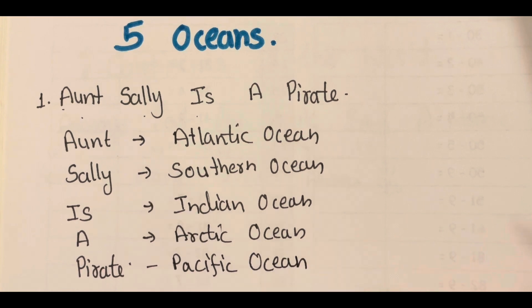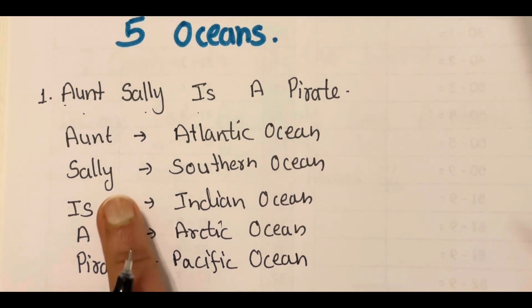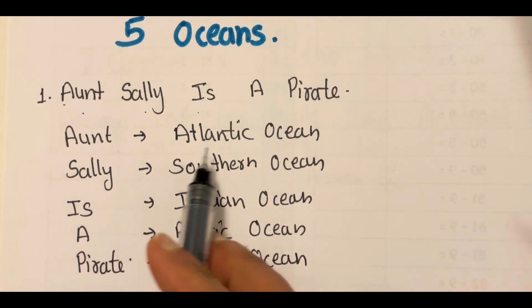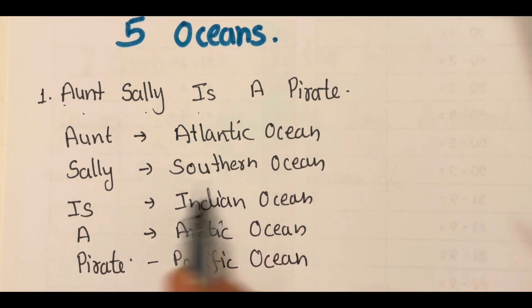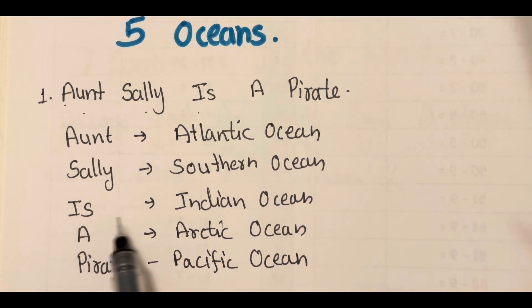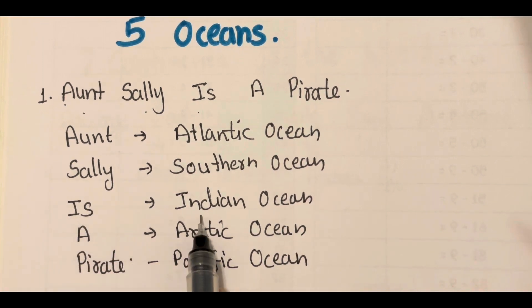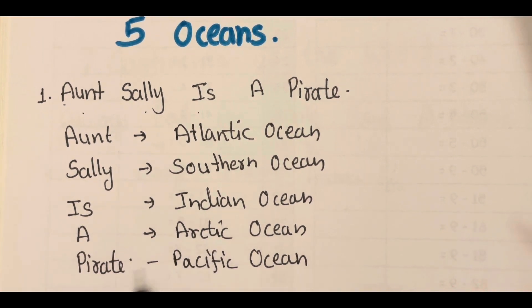How do you remember? Aunt Sally is a pirate. Aunt — Atlantic Ocean. Sally — Southern Ocean. Is — Indian Ocean. A — Arctic Ocean. And Pirate — Pacific Ocean.